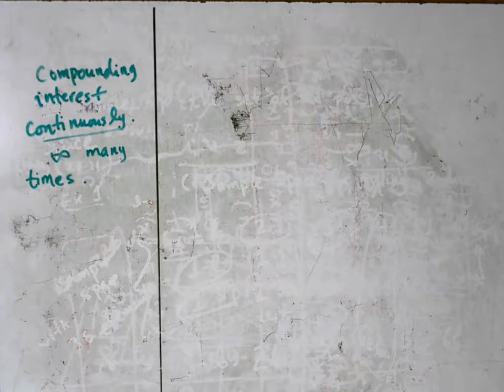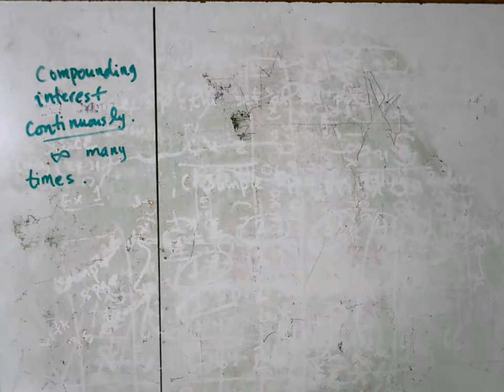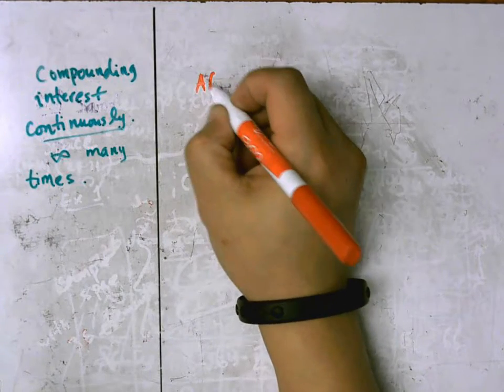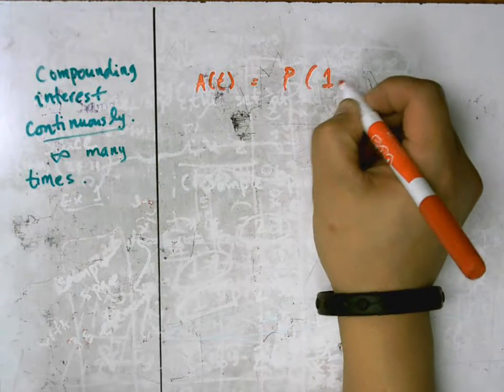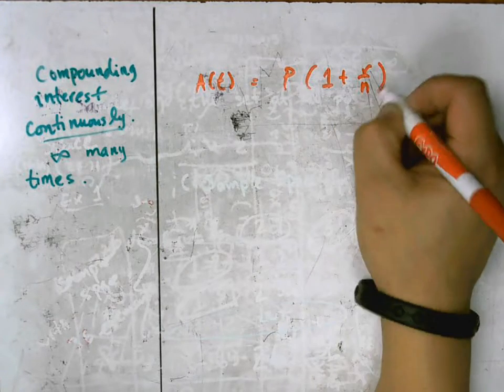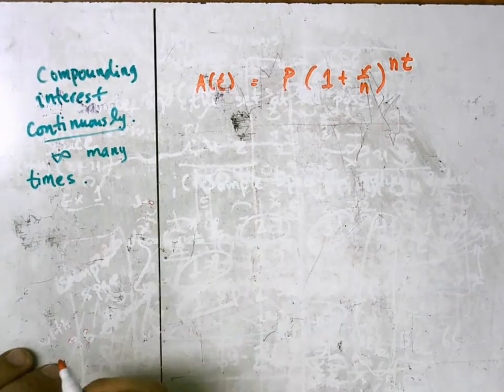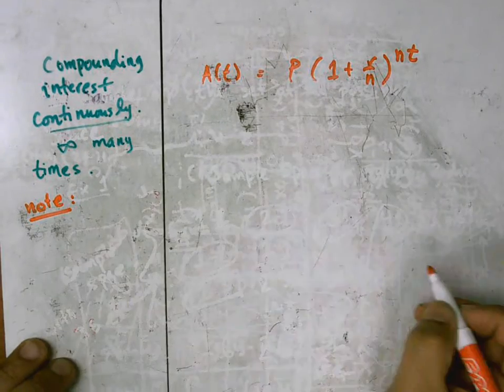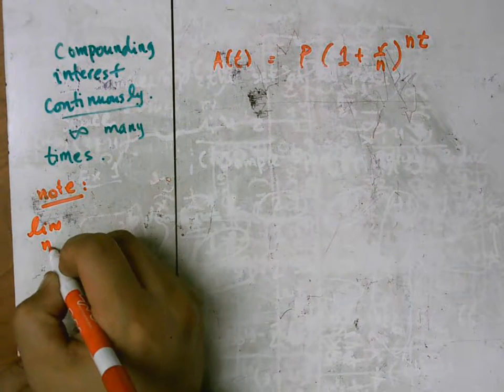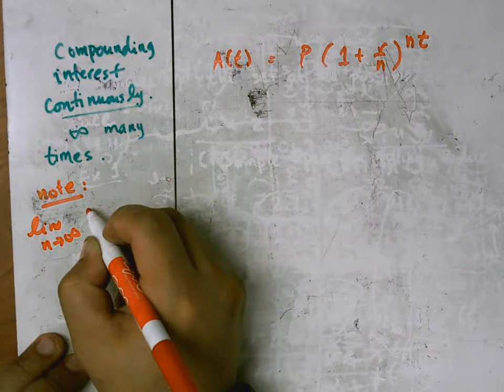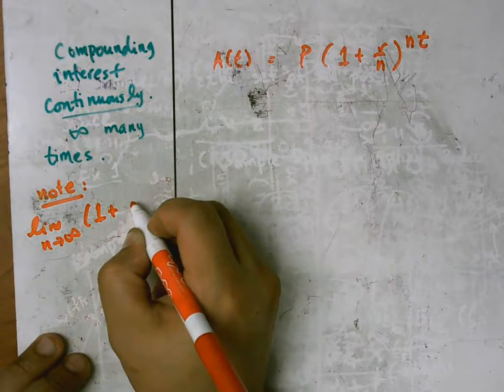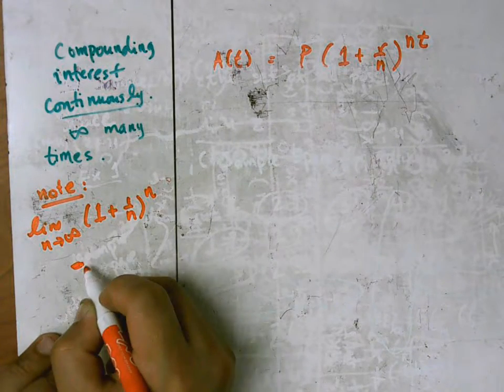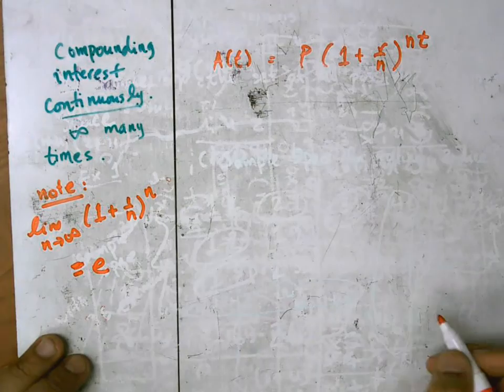So I'm going to start here, and this is where algebra 2 ends and precalculus truly takes over. We know that the amount is p times 1 plus r over n to the nt. And we also know that the limit as n approaches infinity of 1 plus 1 over n to the n is equal to e.